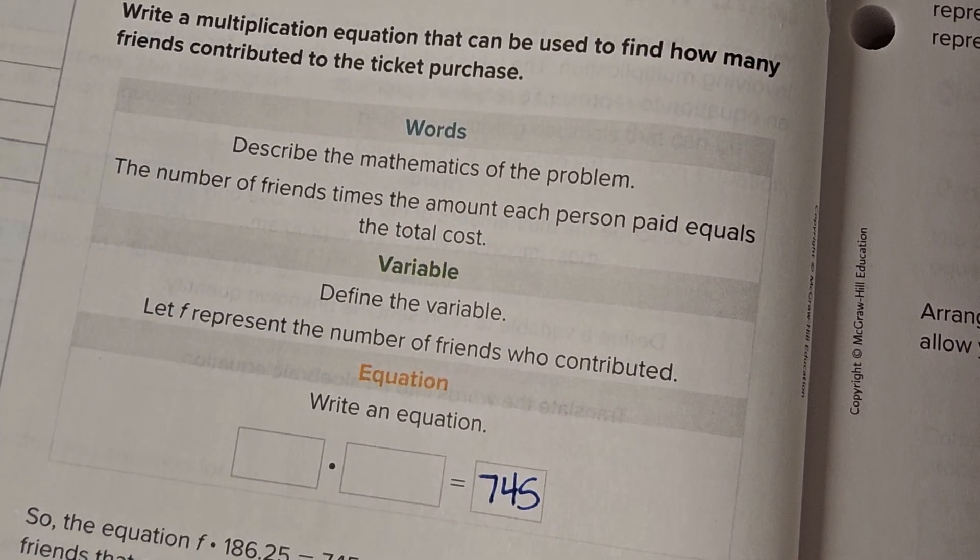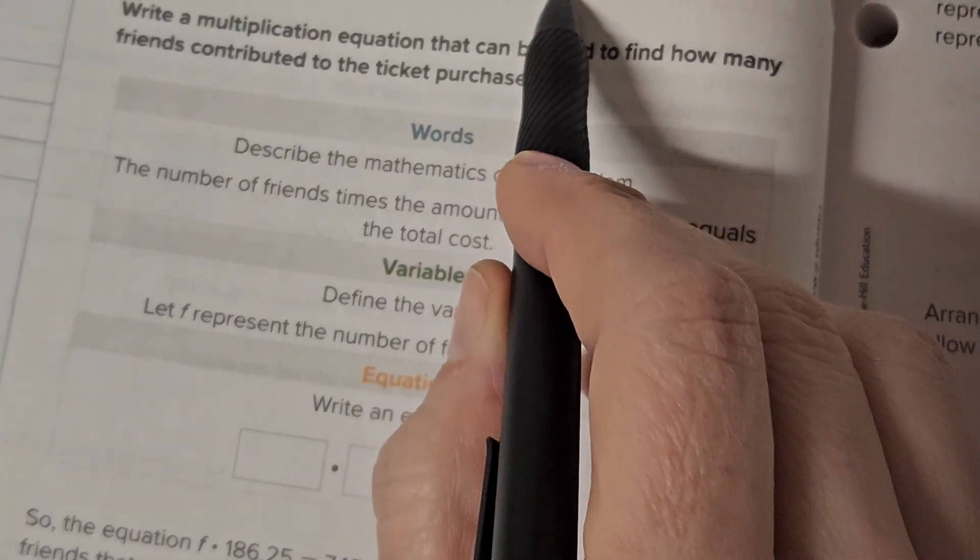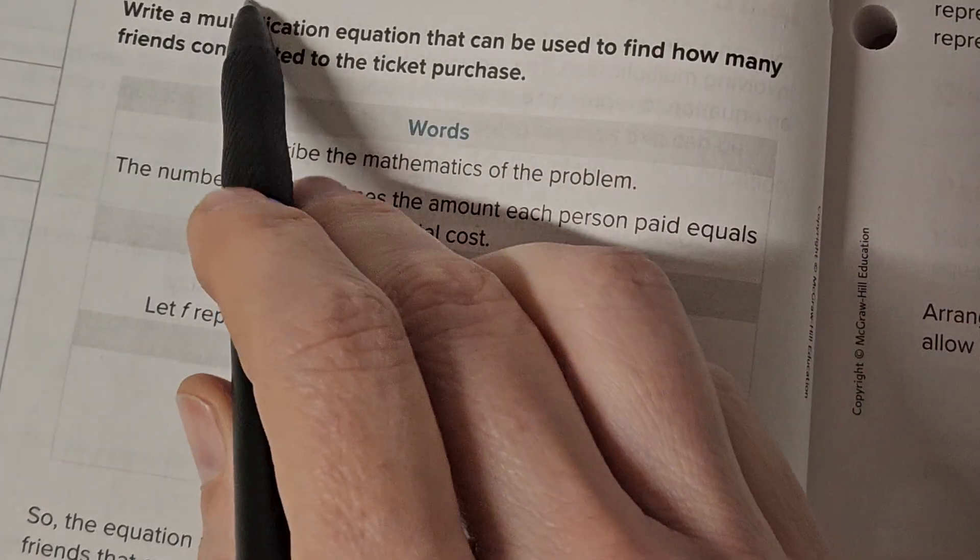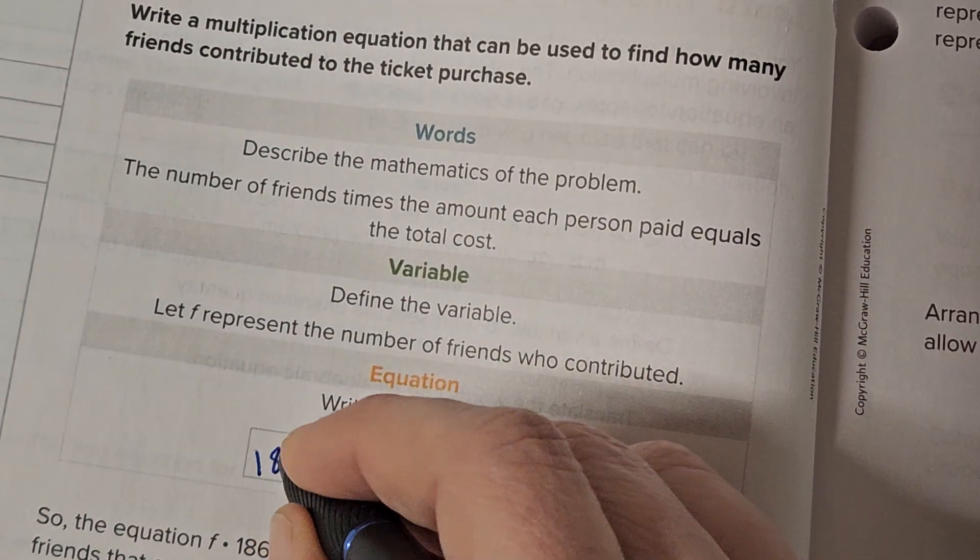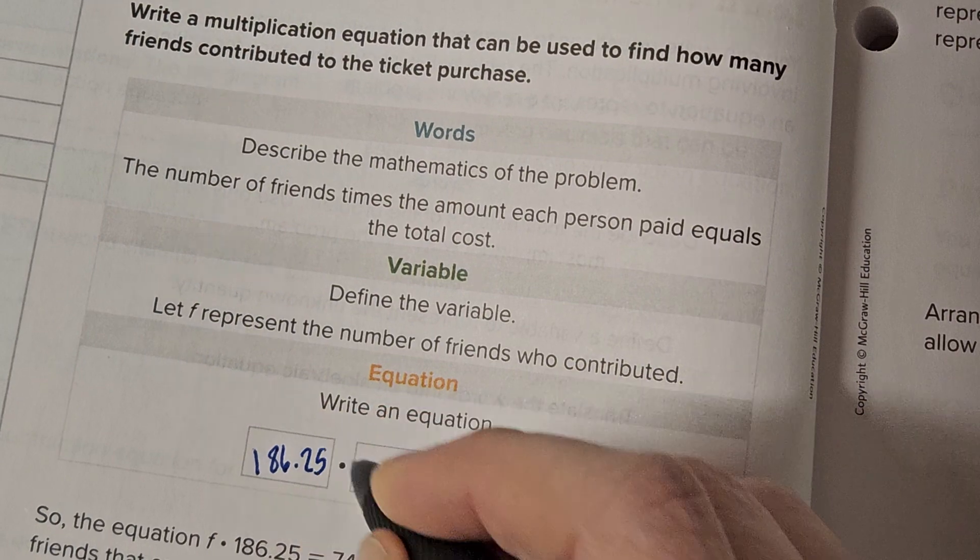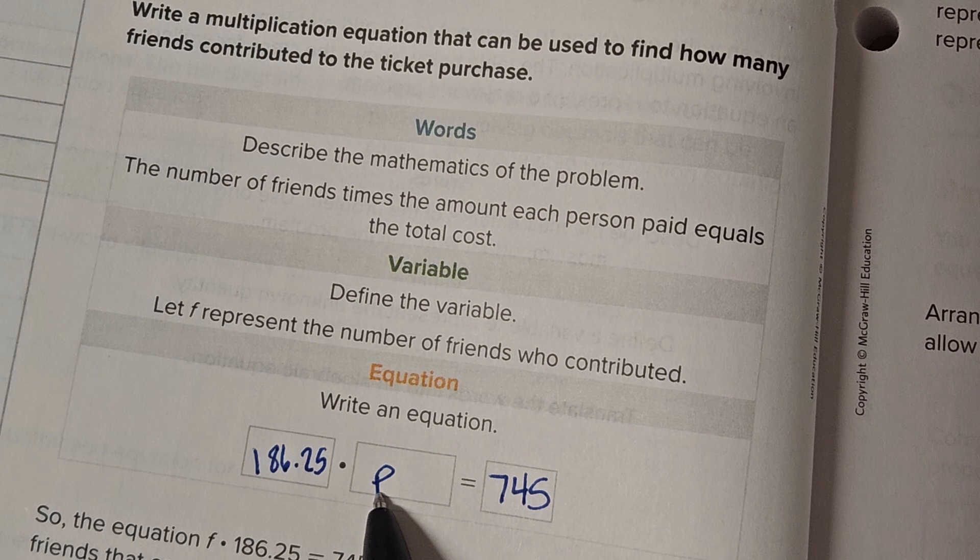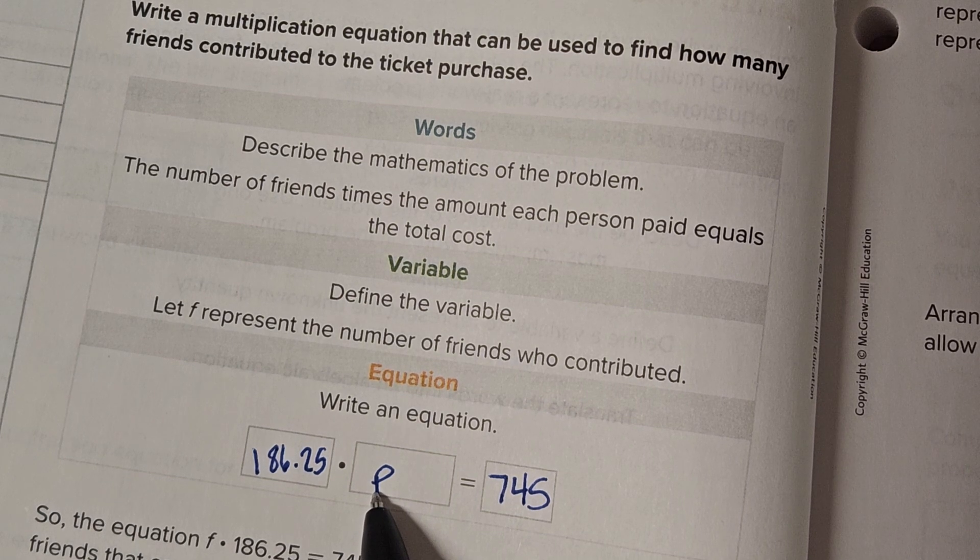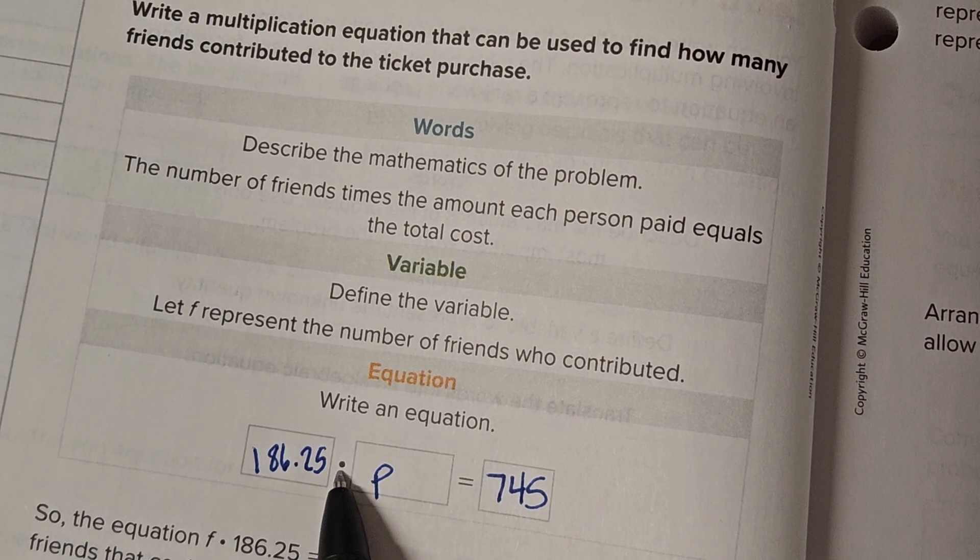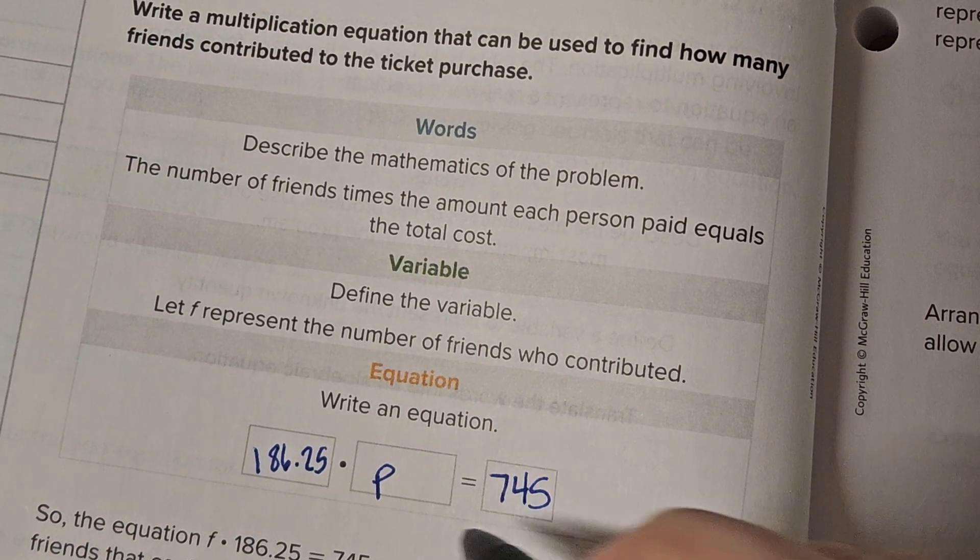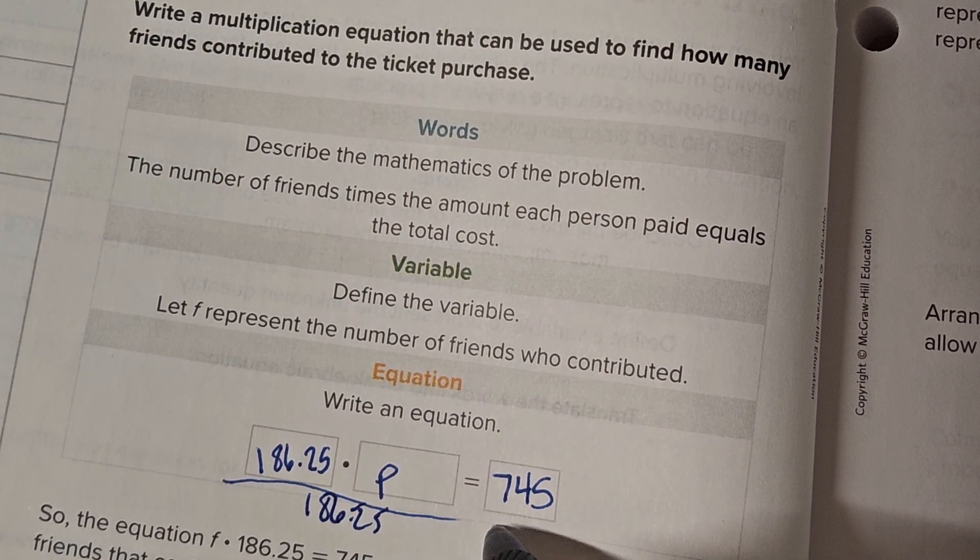I'm writing it right down there because they gave me a spot. The total cost is this, right? Each person contributed $186.25. $186.25 per person. Each person contributed that. So how many people were contributing to this total? Well, this is times. So what's the opposite of times? Yeah, divide. So we're going to divide by 186.25.